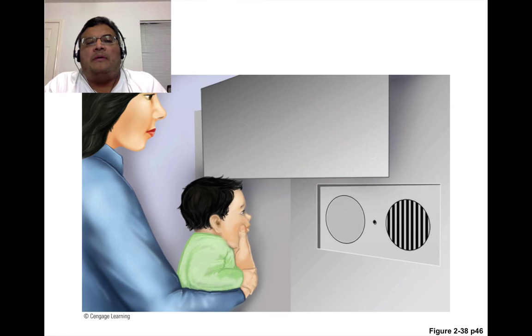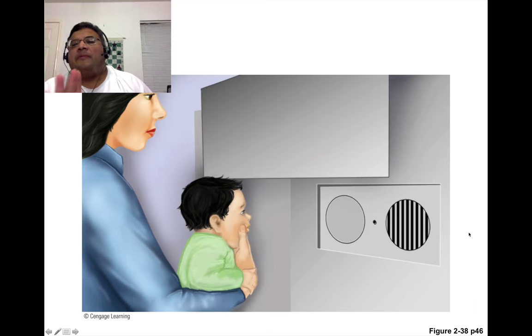Here's an example of the preferred looking technique. Every baby, normal babies, will spend more time looking at this than at this because this is nothing, this is just a blob. This is a much more interesting pattern to a baby, to anybody, but especially to babies. If you show this to a baby, if you show this stimulus to a baby, they will spend much, much more time looking at this as opposed to this, which tells us that they can see a difference between this and this.